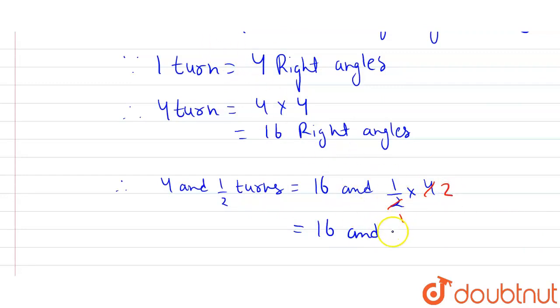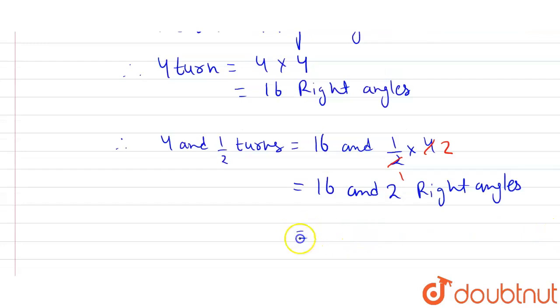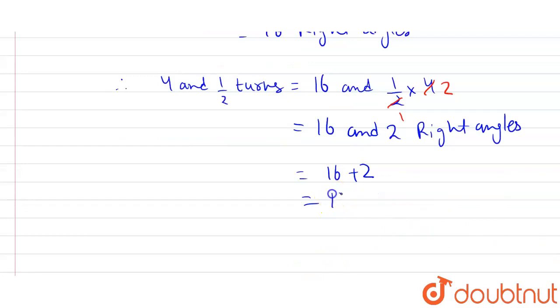It will be 16 and 2 right angles. Therefore, if we add 16 plus 2, how many we will get? We get 18 right angles.